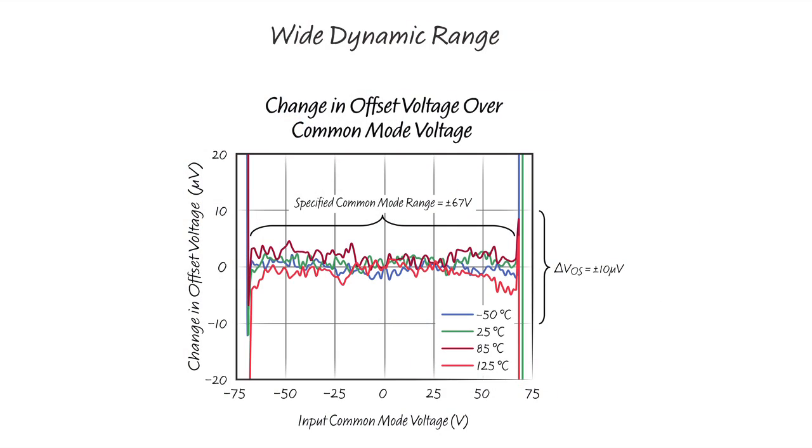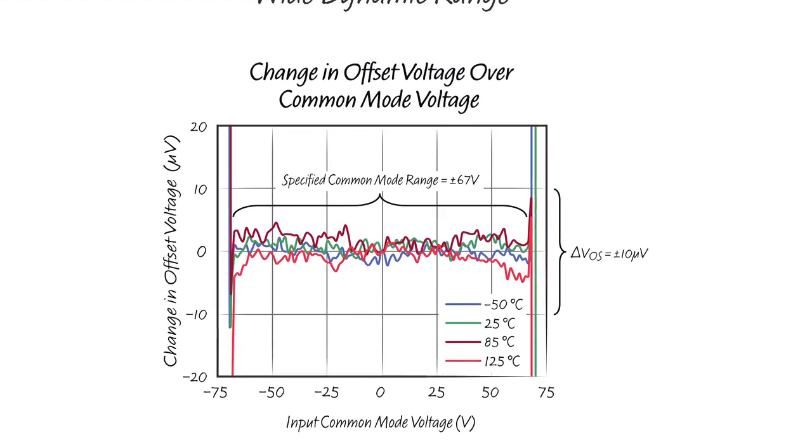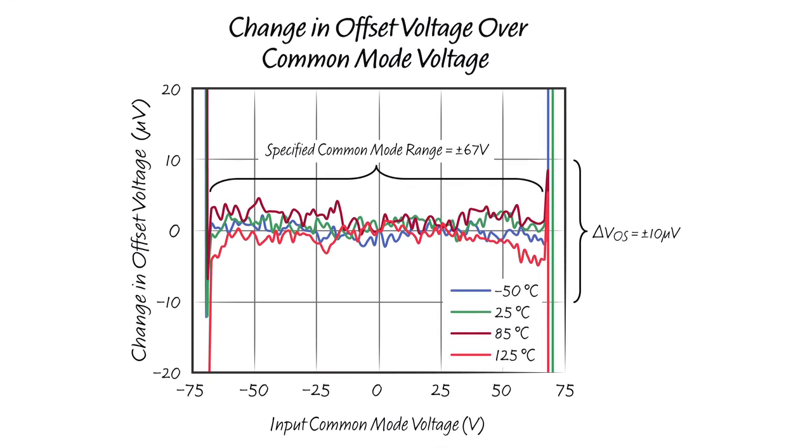Another outstanding feature of this part is its 140 dB of input common mode rejection. This implies that when you run the LTC6090 on 140 volt power supplies and vary the input common mode over its specified input common mode range, you can expect the input referred offset to change less than 10 microvolts.